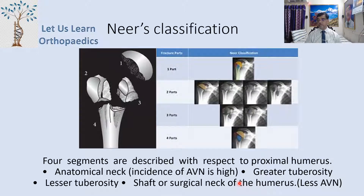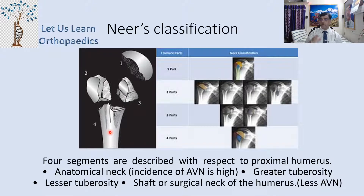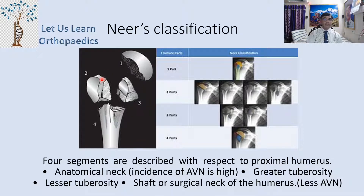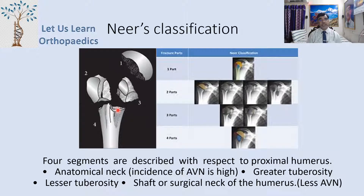Neer has described four segments with respect to the proximal humerus: the head, the lesser tuberosity, the greater tuberosity, and the shaft. Whenever there is a fracture at the anatomical neck, the incidence of avascular necrosis is very high. The greater tuberosity fracture, lesser tuberosity fracture, and surgical neck fracture can also occur. At the surgical neck, the incidence of AVN is very, very less.